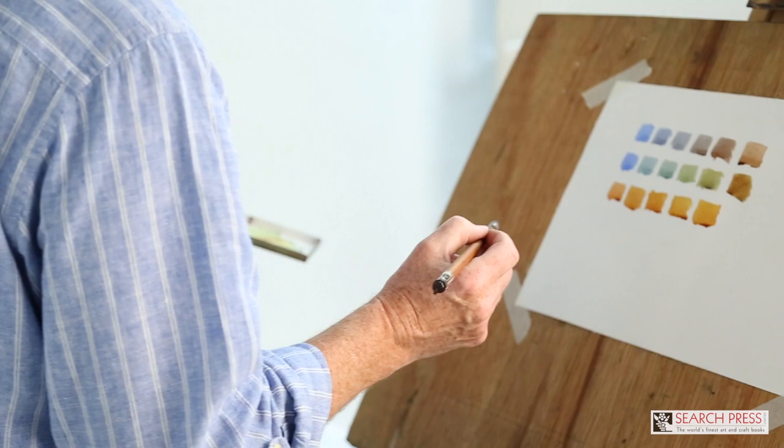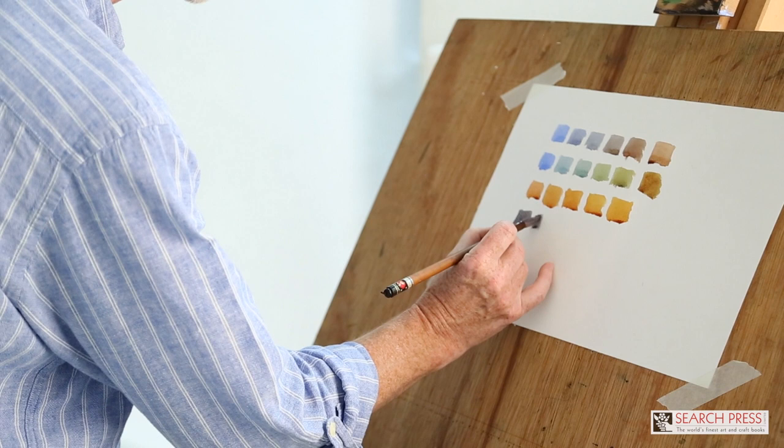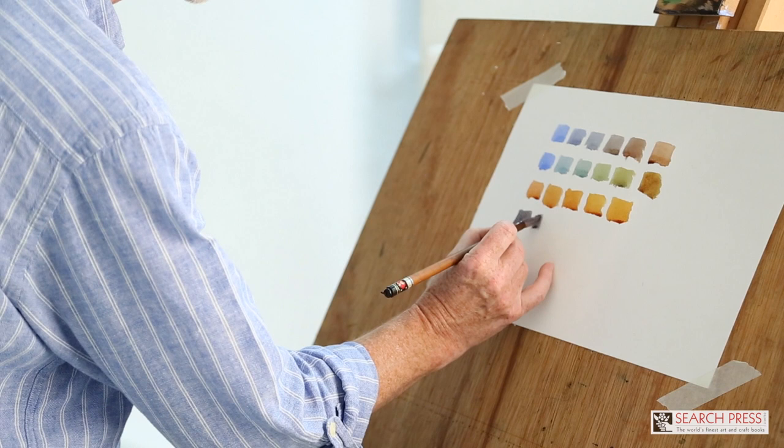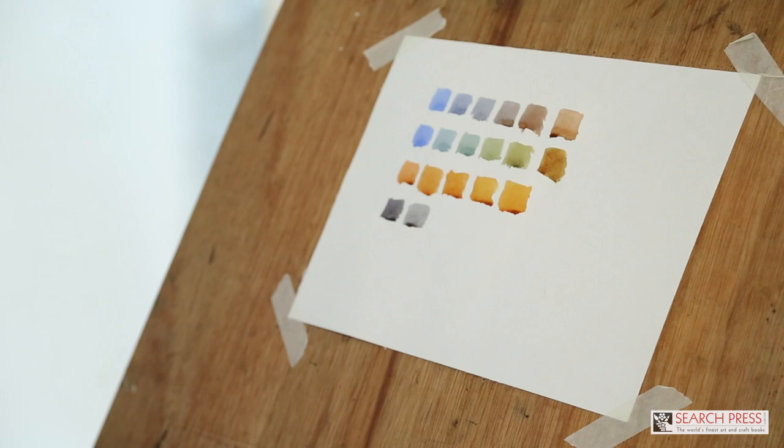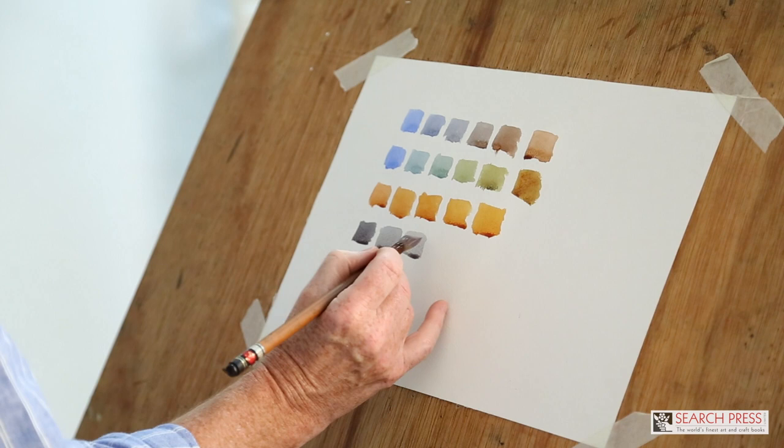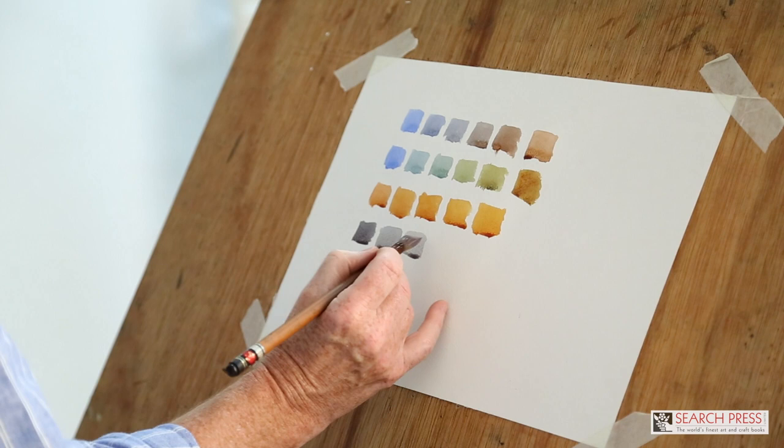And of course, we can vary the strength of the mix, so we can begin with quite a dark grey, and by adding water to that, we will produce a light grey. This is very important because this is tone. Tone is the lightness and darkness of the color, and it is absolutely vital in watercolor. You can get your colors wrong in watercolor, but you can't get your tones wrong. The tones must be correct. They are the foundation of your painting.